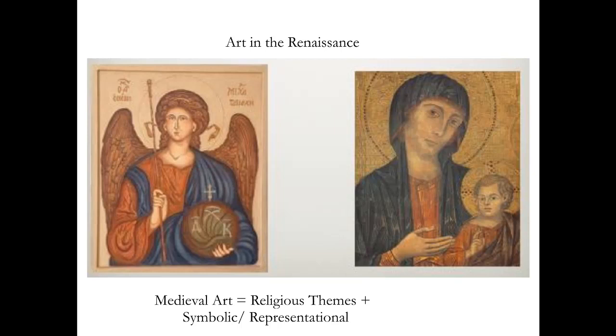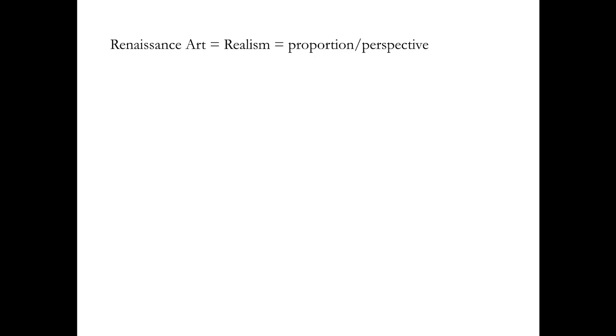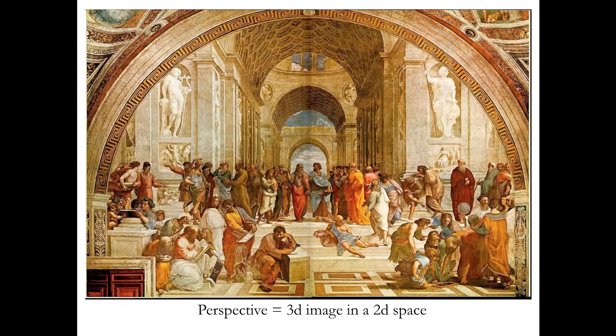Renaissance art is about realism. And to have realism, you need two aspects: proportion and perspective. Perspective is the ability to make a three-dimensional image in a two-dimensional space. The painting up here is the very famous School of Athens. Take a look at how far back these rooms go, and yet it's on a flat wall. So what the painter is able to do is create a three-dimensional space — it looks like you can walk to the back of it. What this creates is depth and volume.